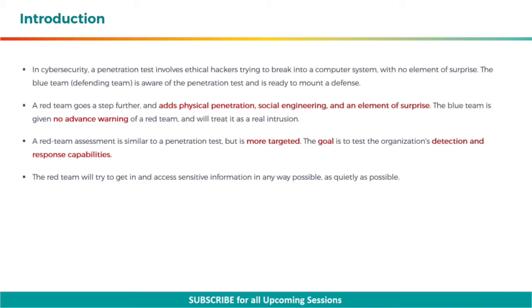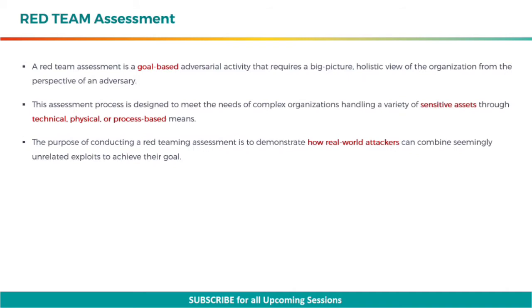A red team assessment is similar to a penetration test but is more targeted. The goal is to test the organization's detection and response capabilities. The red team will try to get in and access sensitive information in any way possible, as quietly as possible. A red team assessment is a goal-based adversarial activity that requires a big-picture, holistic view of the organization from the perspective of an adversary.